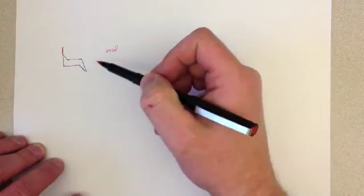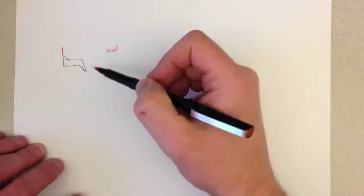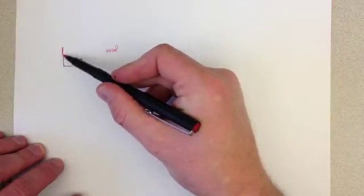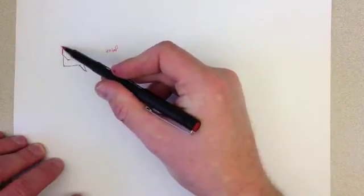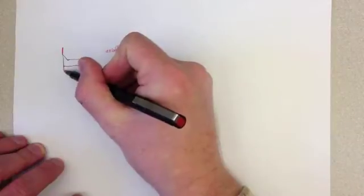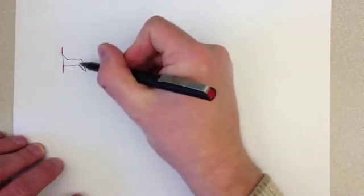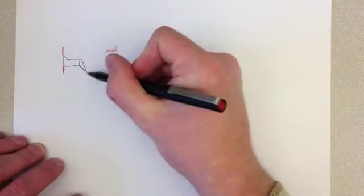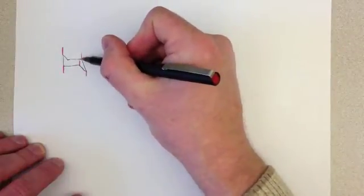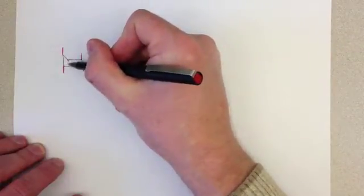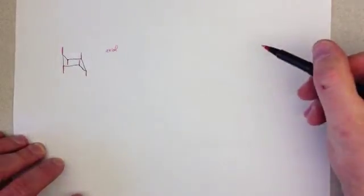They tend to alternate sides of the cyclohexane. So if I know on the top here the axial is going up, then at the next carbon the axial must be going down, the next one goes up, the next one down, the next one up, and this one down. And so I've described all the axial positions on the cyclohexane.